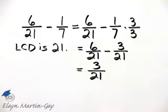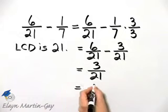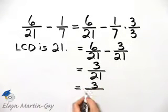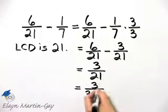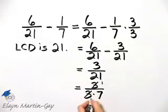Now that's not in simplest form because three and 21 have a common factor of three. In other words, I can write 21 as three times seven and then divide out that common factor. I have one over one times seven which is one seventh.